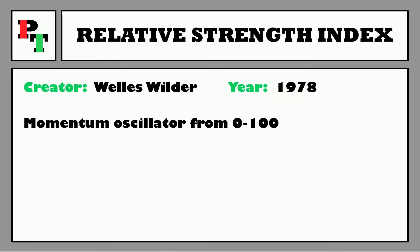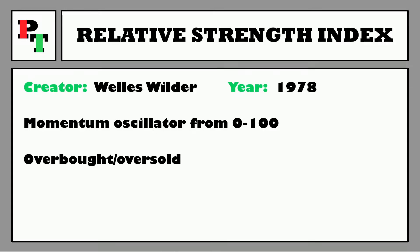It appears as a momentum oscillator with a single line that oscillates in a set range from 0 to 100. In its traditional form, it's trying to find out if an asset is overbought or oversold. If there's too much buying going on in the market, then the RSI will have wanted to figure that out so that it can signal to you that the momentum is too hot and a reversal could be due.